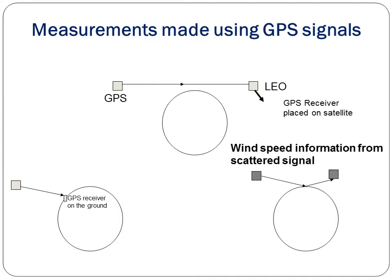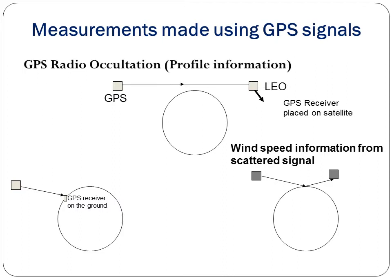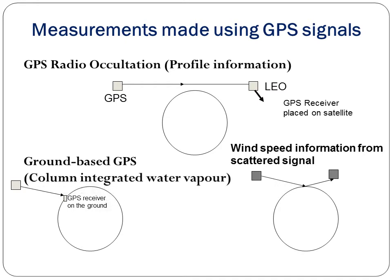The measurements being made using GPS signals include the GPS radio occultation basic profile information, where a GPS signal is measured by a GPS receiver placed on a satellite. It can measure wind speed information from a scattered signal. The second is ground-based GPS, where the receiver is placed on the earth's surface. Third, wind speed information from scattered signals where two satellites in space monitor atmospheric information.